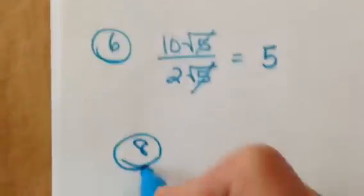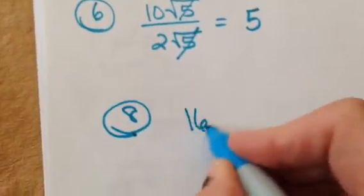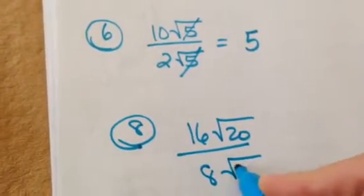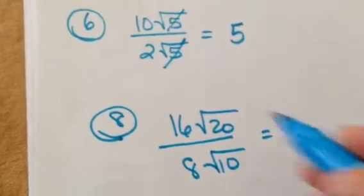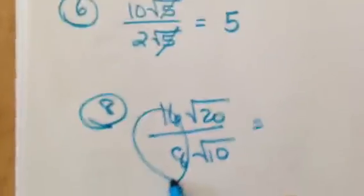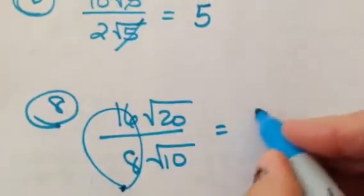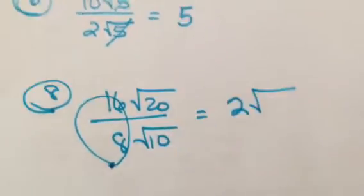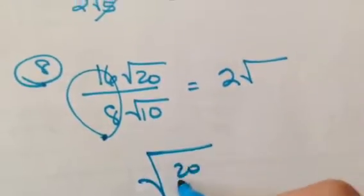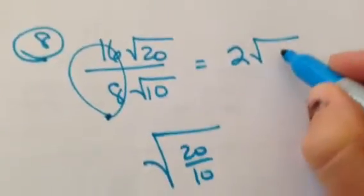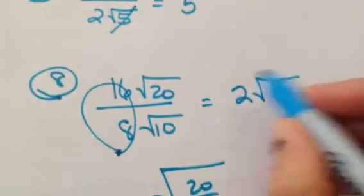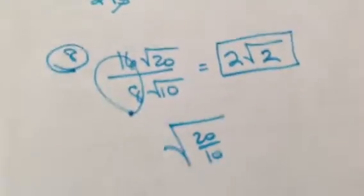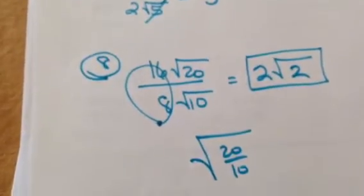Look at number 8 from 4a: 16 square roots of 20 all over 8 square roots of 10. You can simplify what's on the outside of the radicals: 16 over 8 is 2. And the insides simplify as well — think of it as 20 over 10, which is 2. So you get 2 square roots of 2. Since 2 is not perfect, you can't do anything further with it — so you leave it just like that.